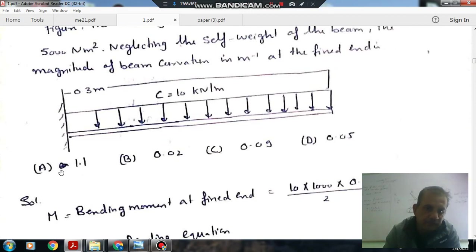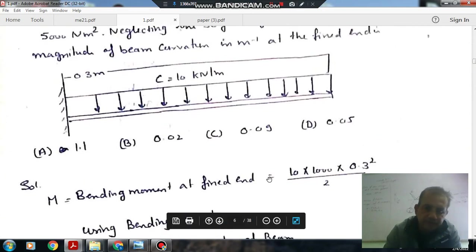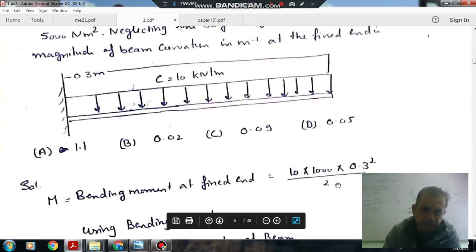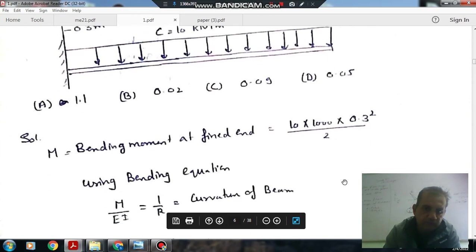The magnitude of the beam curvature in meter inverse at the fixed end is: options are A 1.1, B 0.02, C 0.09, D 0.05. The bending moment at the fixed end is WL square by 2. That is 10 into 1000 into 0.3 into 0.3 by 2, which is 10000 times 0.3 square by 2.